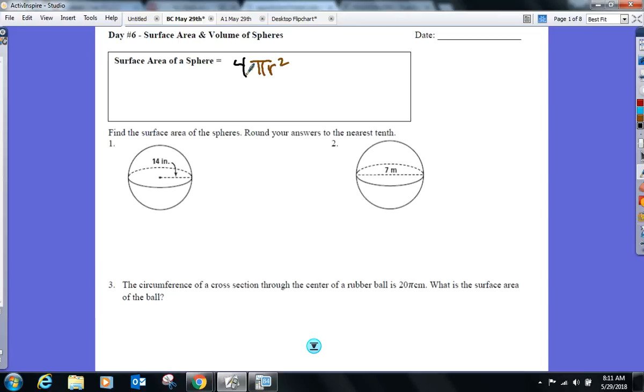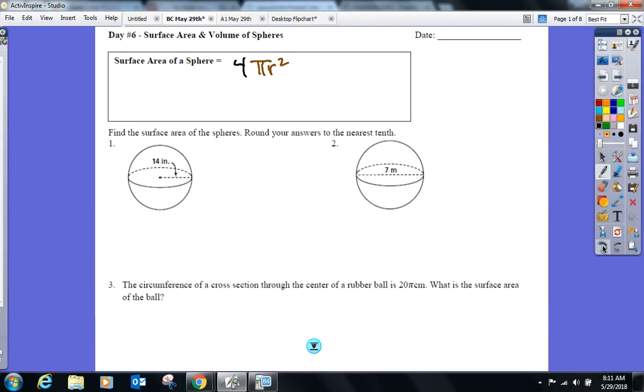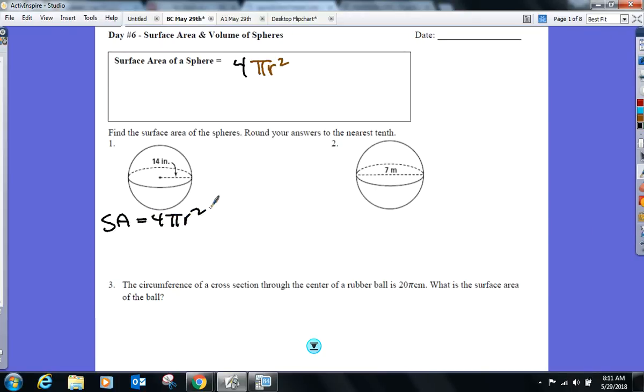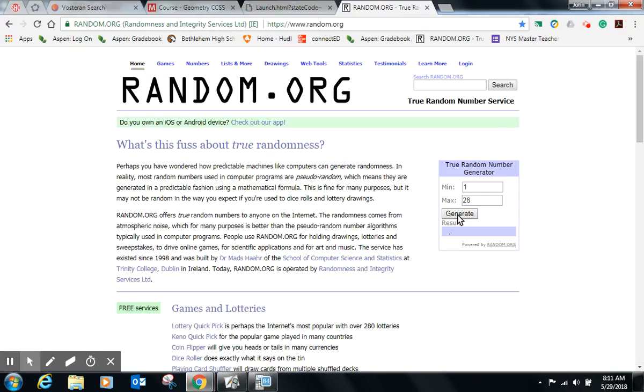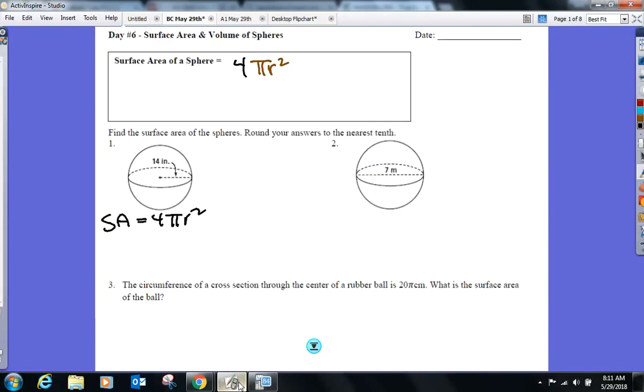Let's find a couple surface areas here. So this first sphere, surface area 4 pi r squared. This is what's great about this surface area formula. What's the only value you need to plug in? Radius. If you know the radius, you know the surface area. So radius for this one, let's start it off by hearing from number three. Radius of this one?